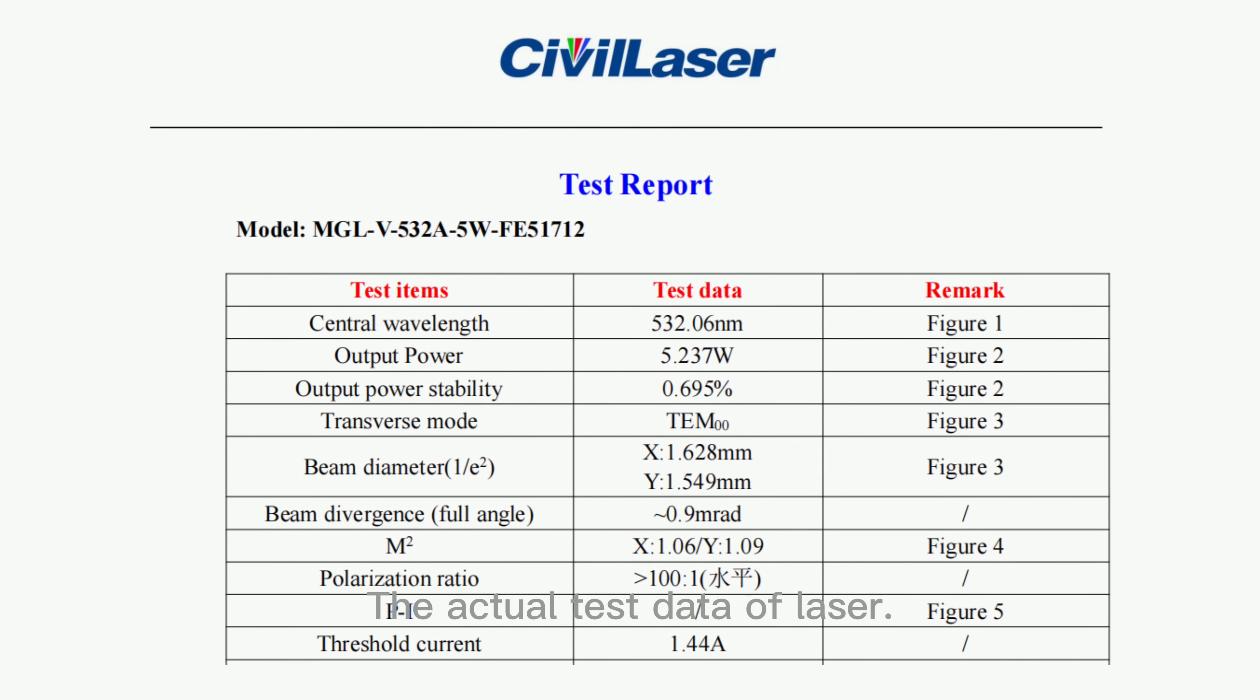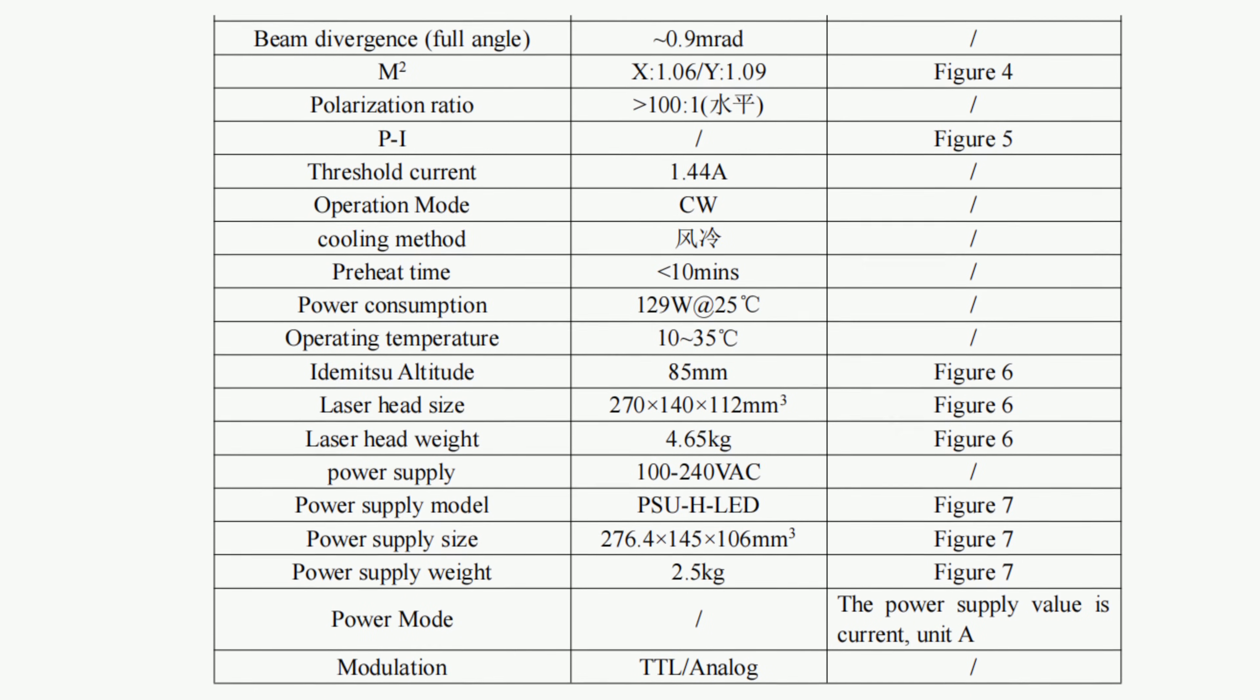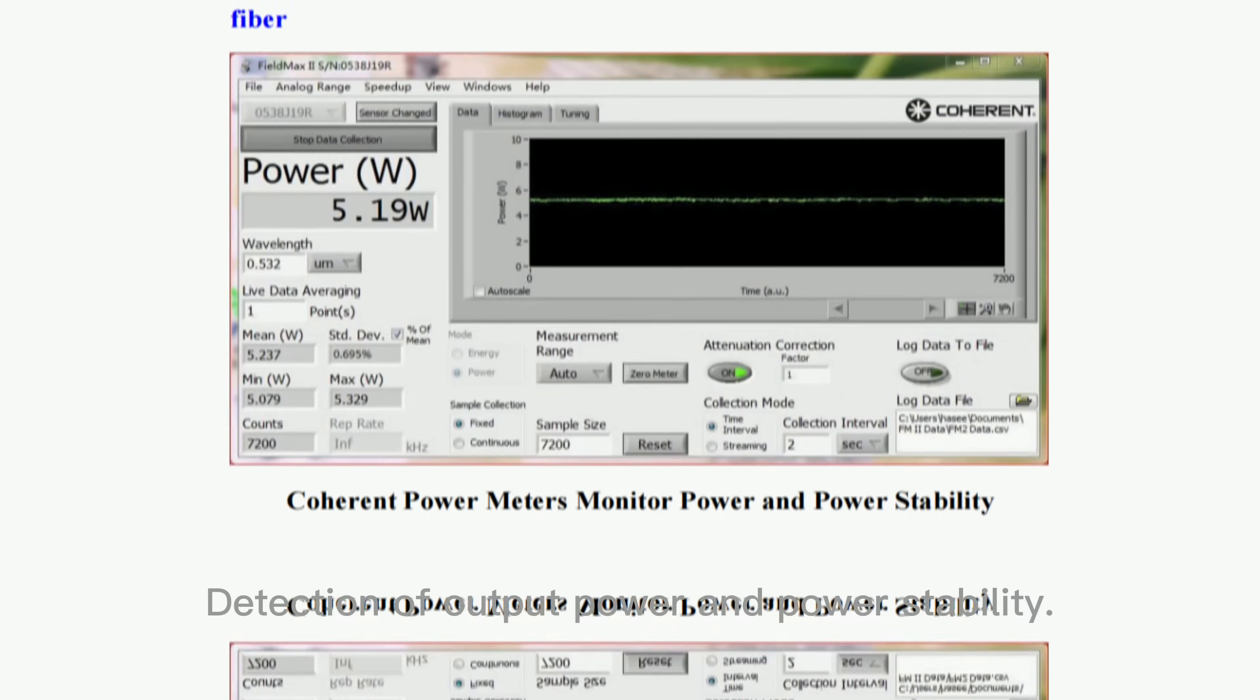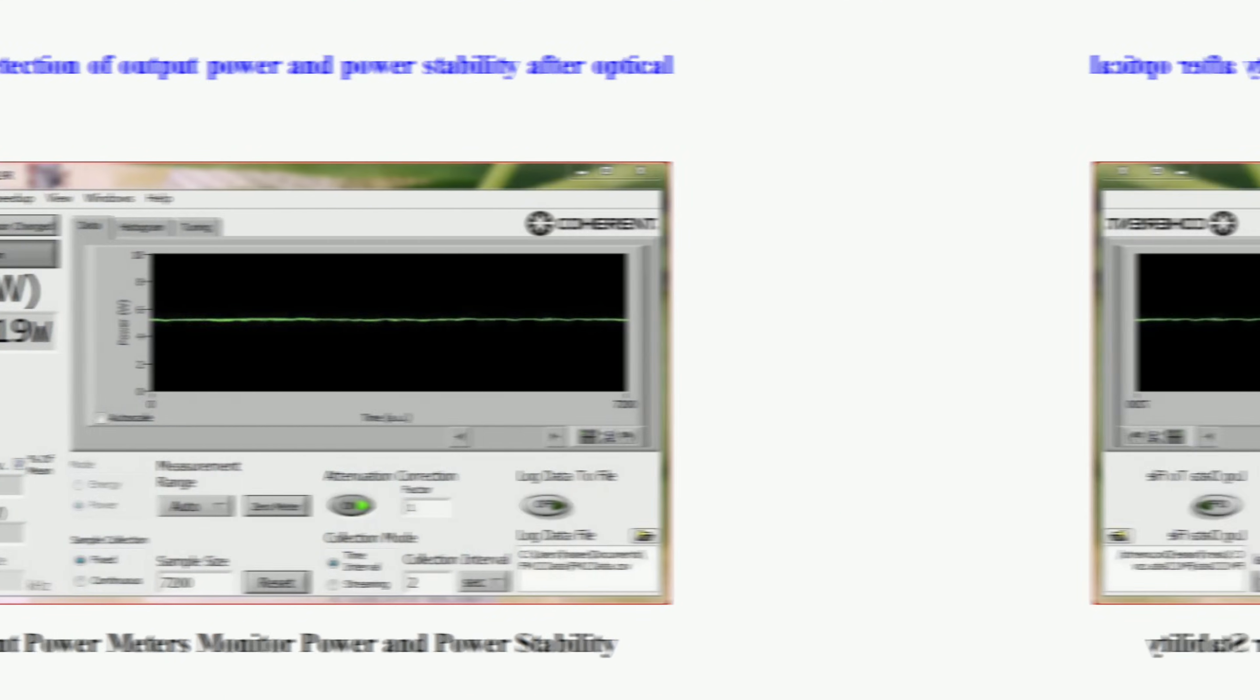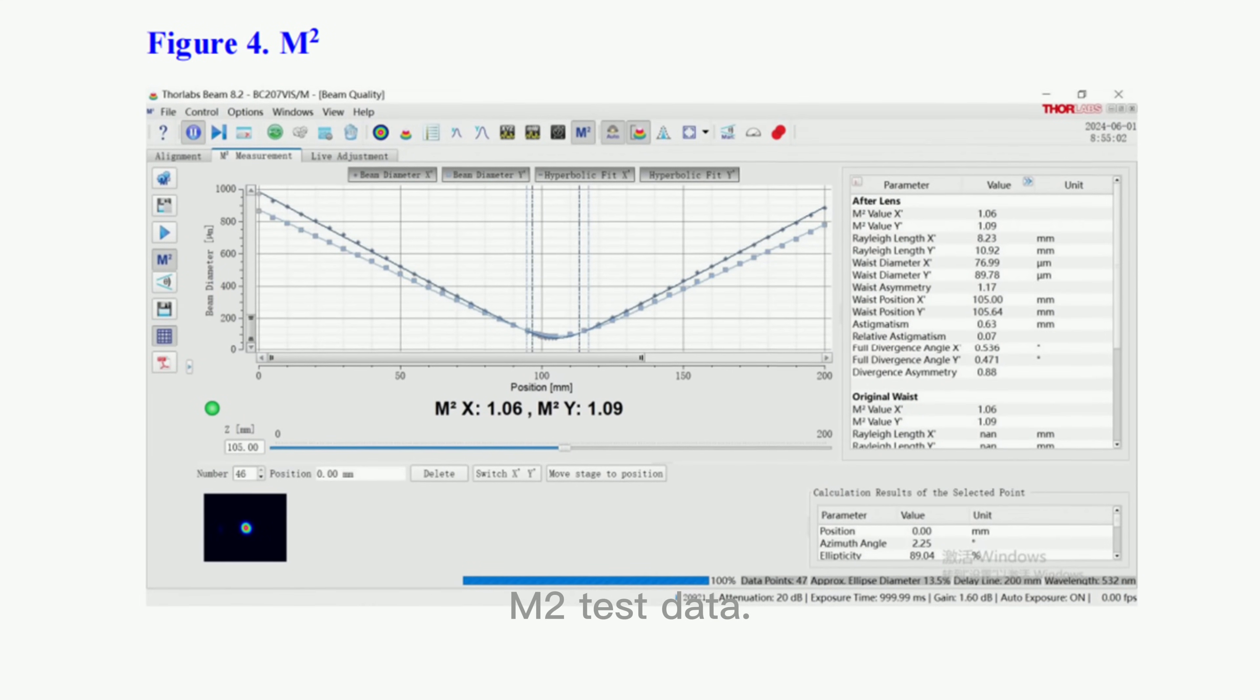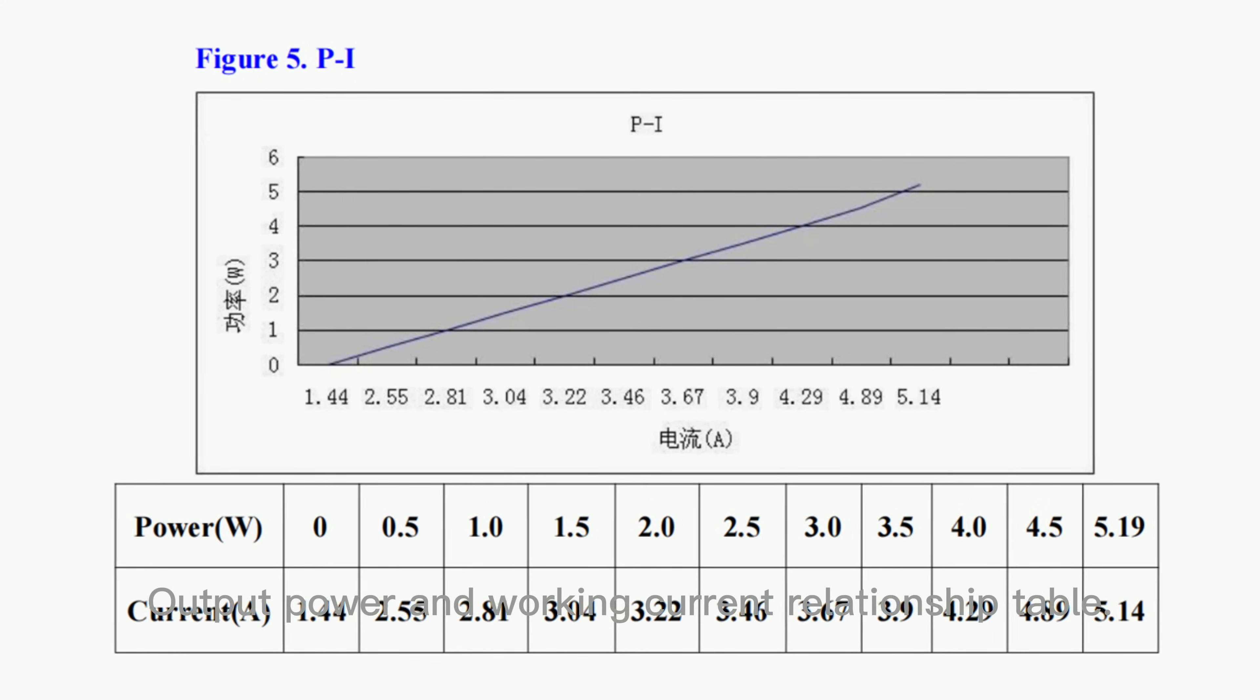The actual test data of laser: test chart of center wavelength, detection of output power and power stability, beam profile detection, M2 test data, output power and working current relationship table.